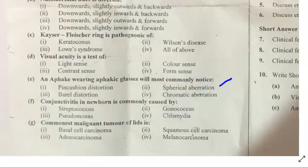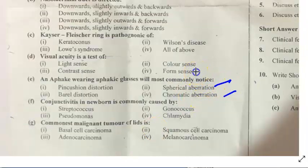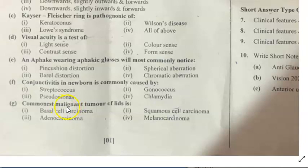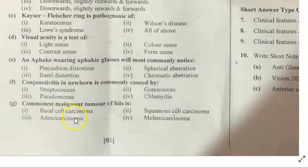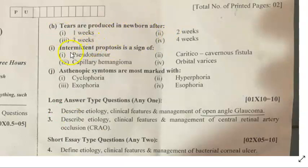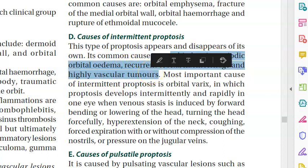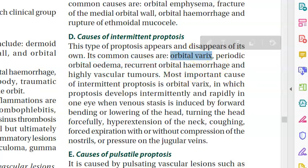A person wearing fake (plain) glasses will most commonly notice spherical aberration. Questions may have multiple correct answers. Conjunctivitis in the newborn is commonly caused by gonococcus, though other causes are now more frequent. The commonest malignant tumor of the eyelids is basal cell carcinoma. Tears are produced in newborns after a few weeks. Intermittent proptosis is a sign of orbital varices.